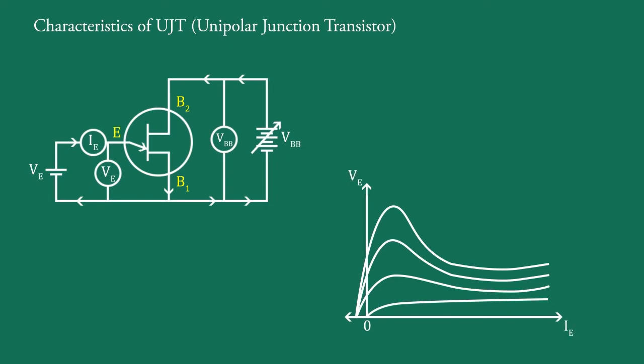These curves are known as characteristics of UJT. If VBB is made zero and a voltage VE is applied to emitter, the resulting current IE flows from base 1 to emitter in external circuit, and a curve which is simply diode characteristic.